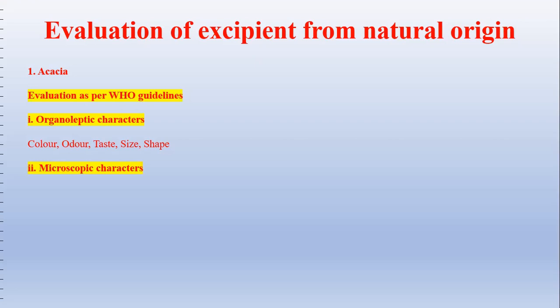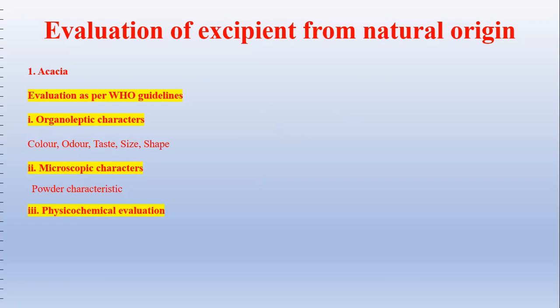The next parameter is microscopic characteristics. Physical appearance can be easily altered, so to verify purity of the drug there is a need to examine internal characters. Powder characteristics are an important internal character you must know. Under physical evaluation, particle size is checked under the microscope. For organized crude drugs, trichomes and cellular parts such as diameter are to be noted. Various parameters must be checked to assess drug size and quality.